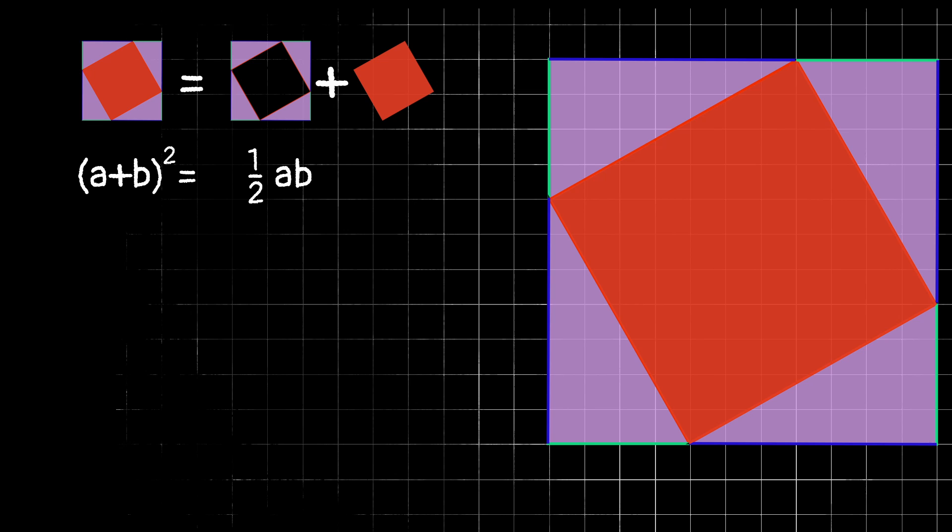Depending which way you're looking at the triangle, either one could be the base, and we know that multiplication is commutative, so it doesn't matter which order we do it in. But we have four of these triangles, so we will multiply that area by four.